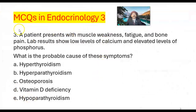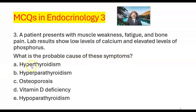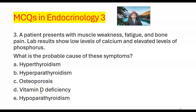Question number 3. A patient presents with muscle weakness, fatigue, and bone pain. Lab results show low levels of calcium and elevated levels of phosphorus. What is the probable cause of these symptoms? A. Hyperthyroidism. B. Hyperparathyroidism. C. Osteoporosis. D. Vitamin D deficiency. E. Hypoparathyroidism.